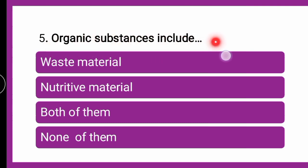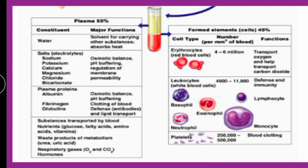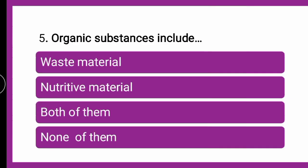Next question: organic substances include — waste material, nutritive material, both of them, or none of them? Organic substances include various nutrients like glucose, amino acids, and vitamins, as well as waste products such as urea and uric acid. So it includes both waste material and nutritive material. The correct answer is both of them.